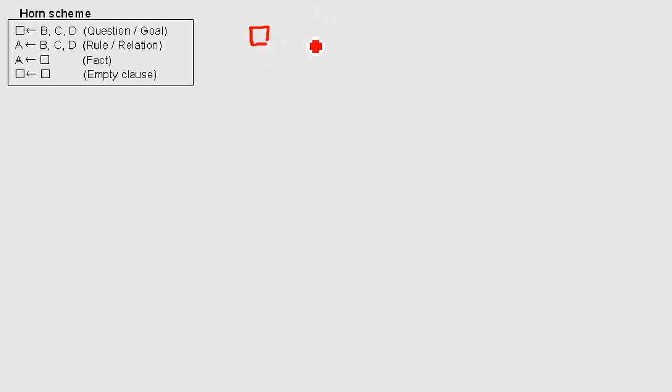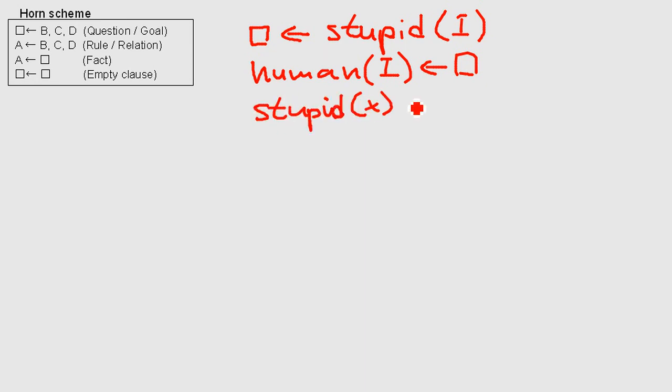Okay, we want to answer a very important question, and the question is: am I stupid? To answer this question we have two facts. We have one fact, fact number one is I am human. You see it's a fact. And the second thing, we don't have a fact, we have a relation that says if X is human then X is stupid. X can be everything, X could be me, X could be you, X could be the house on the hill. But the house on the hill is not human, therefore it cannot be stupid, right? Of course we would need to have proven that the house on the hill is really not human. Anyway,